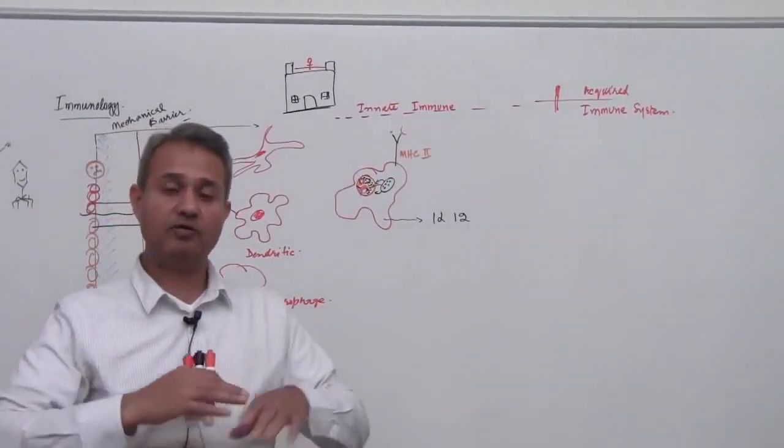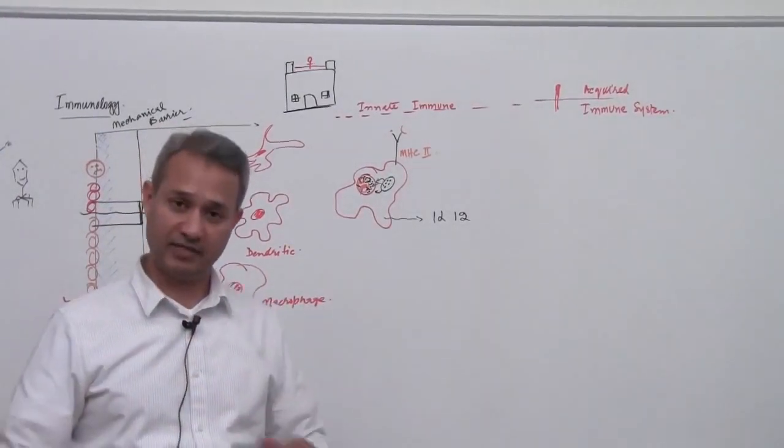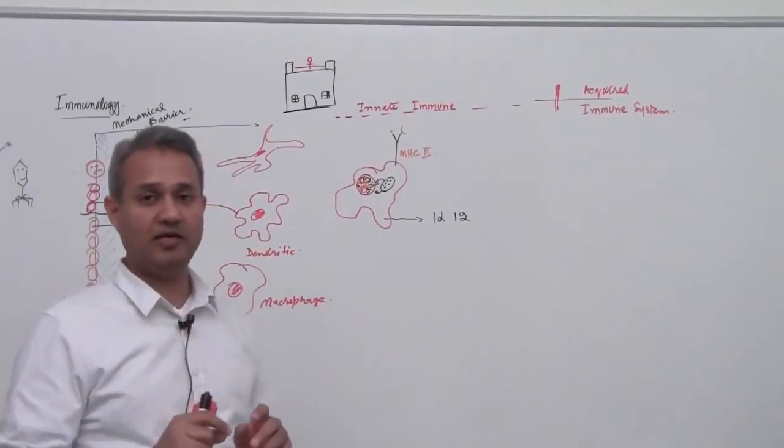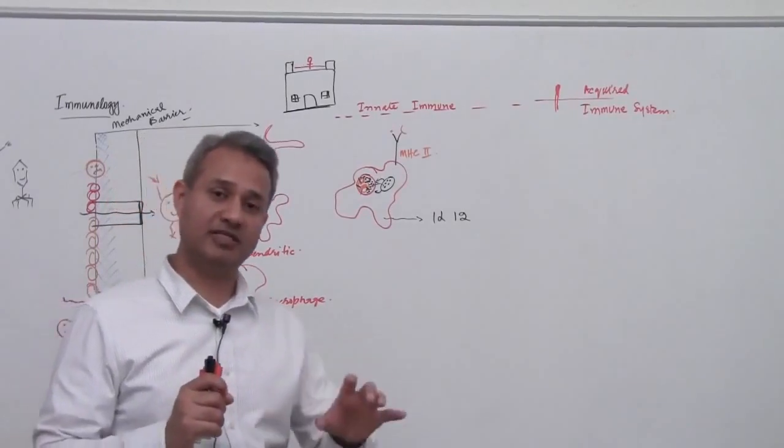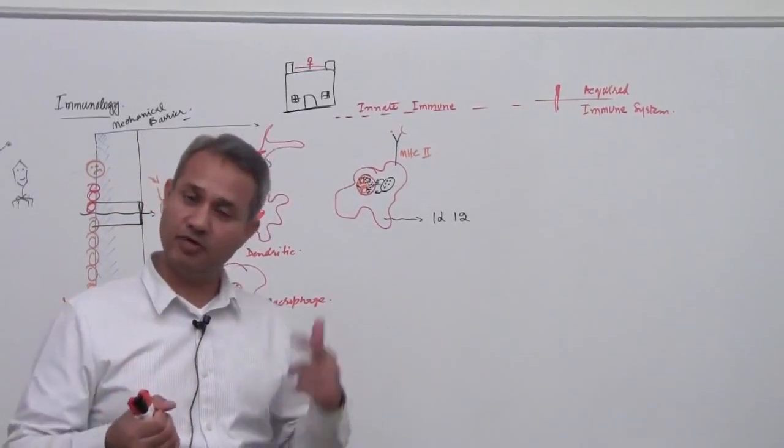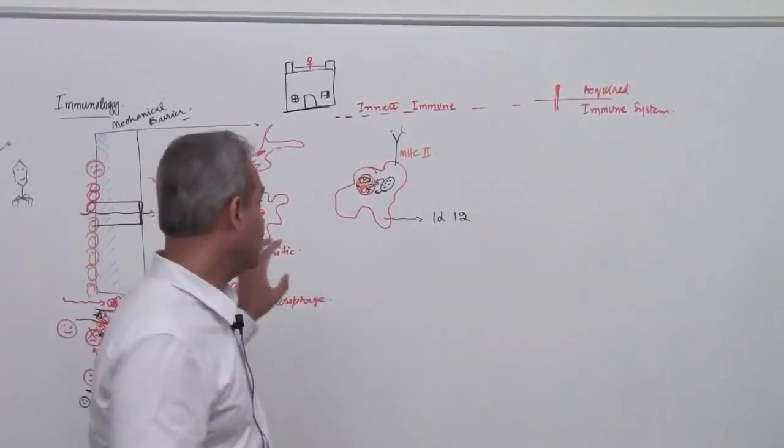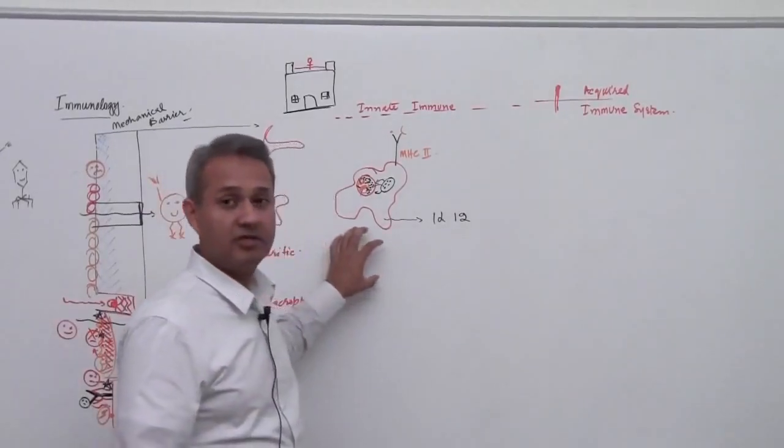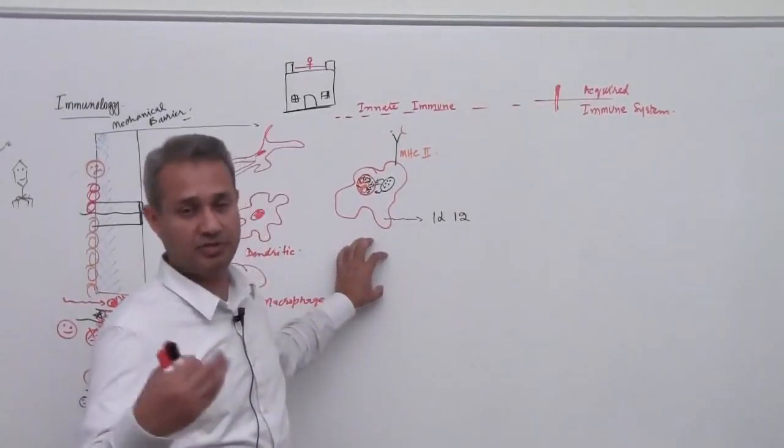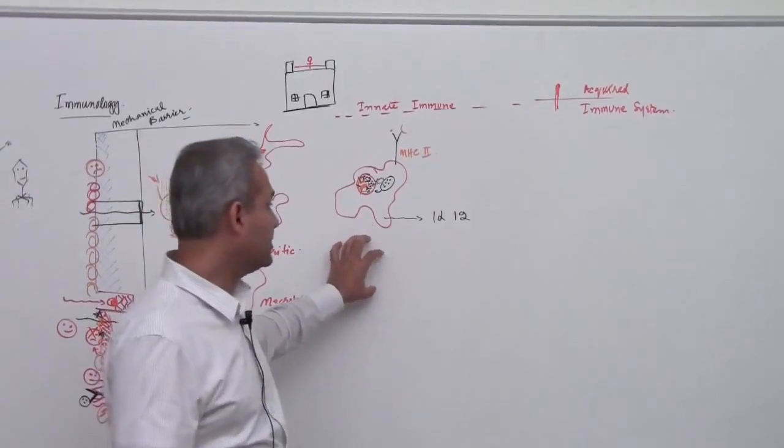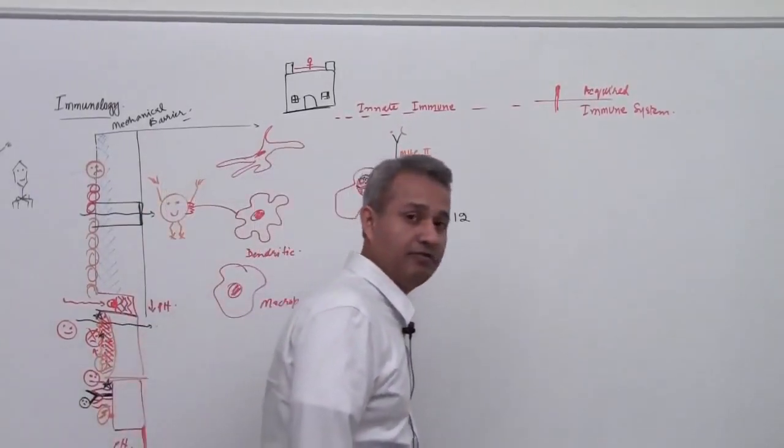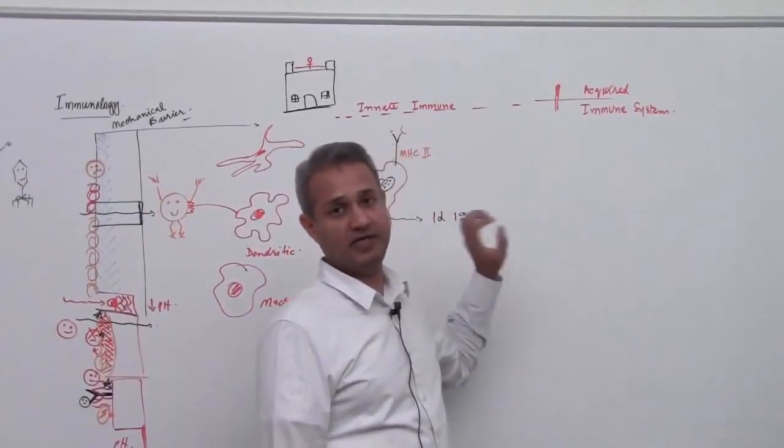So out of all the immunology lectures, if you remembered this one thing, you would have a very solid understanding of how things are working, one sentence. And that is the macrophage will act as, or antigen presenting cells will act as a bridge between the acquired and innate arm.